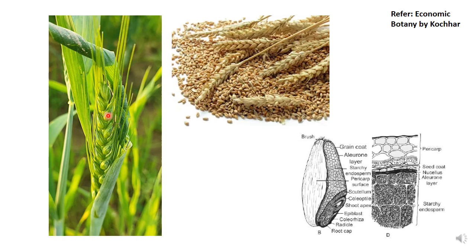This is a hexaploid species of wheat. This is the picture of a plant where you see the leaves and the inflorescence. This is the dried spikelet and these are the grains when you cut the section in your practical classes and see under microscope. The seed is actually a fruit with a pericarp, followed by seed coat, then aleurone layer, then starchy endosperm, and then you have the embryo which has a shoot apex and a root cap.